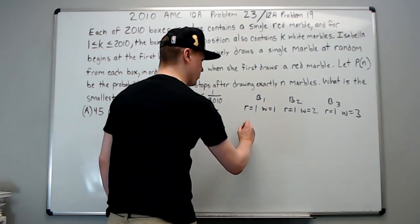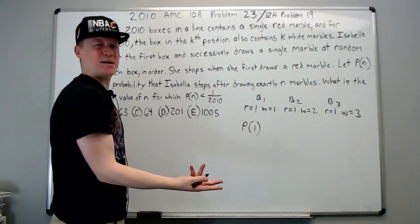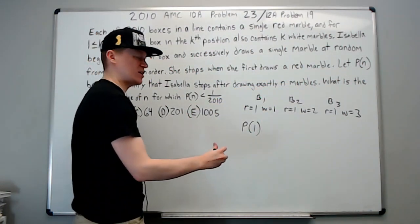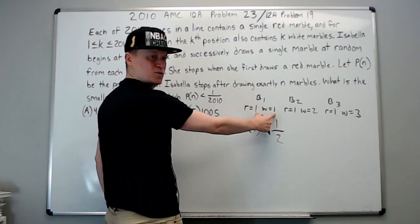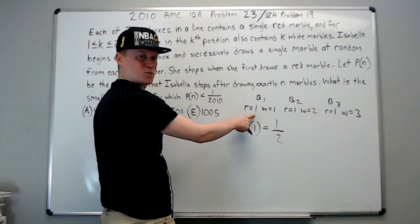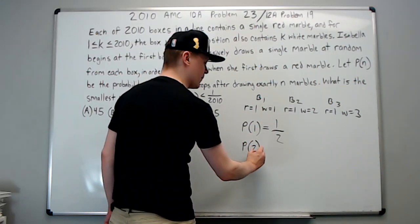So let's do probability of one. One being n, she would be stopping after the first box, which means she got a red marble on the first box. There's two marbles in the first box, one of which is red, so there's a one in two chance she draws red. How about if she stops after the second box?